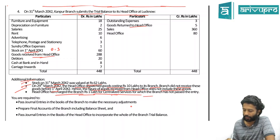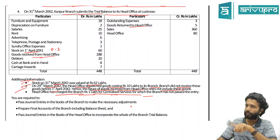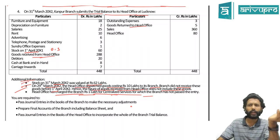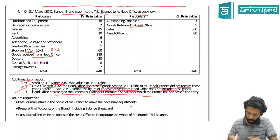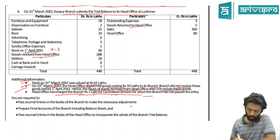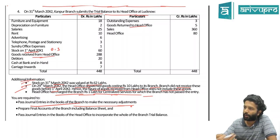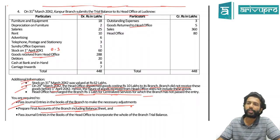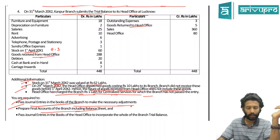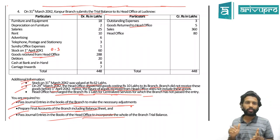HO charges 1 lakh for centralized services to the branch, not yet recorded by branch. For branch, it is an expense due. Journal entry in branch books: Centralized Service Charge Account debit to HO Account 1 lakh. Three requirements for this problem: first, pass journal entries in branch books for the two adjustments; second, prepare final accounts of the branch including balance sheet; third, pass journal entries in HO books to incorporate the entire branch trial balance for consolidation.